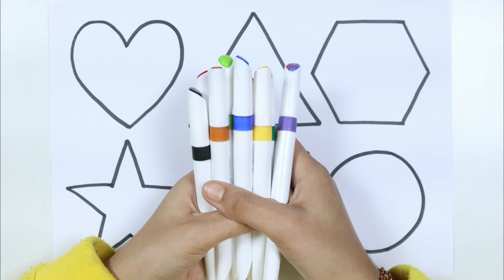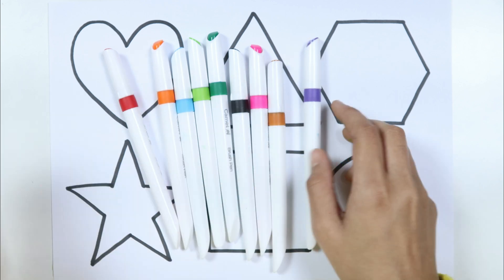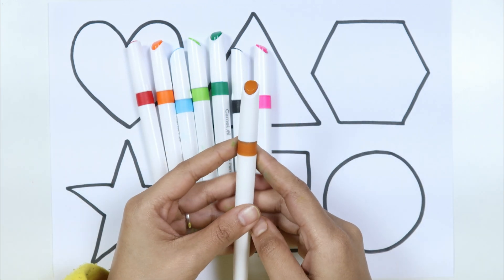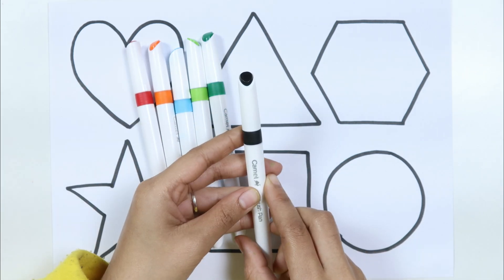Let's learn some colors. Yellow color. Blue color. Violet color. Brown color. Pink color. Black color.